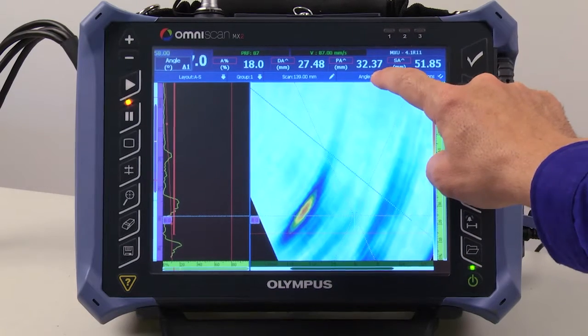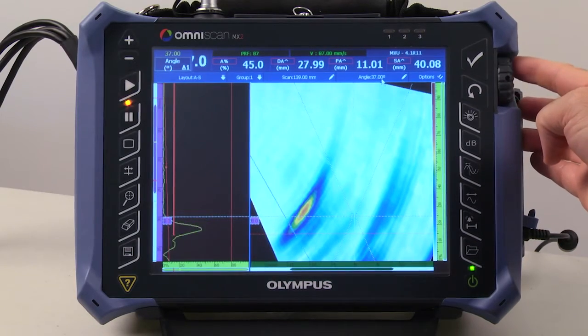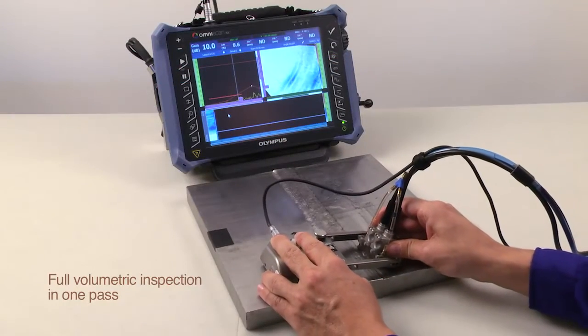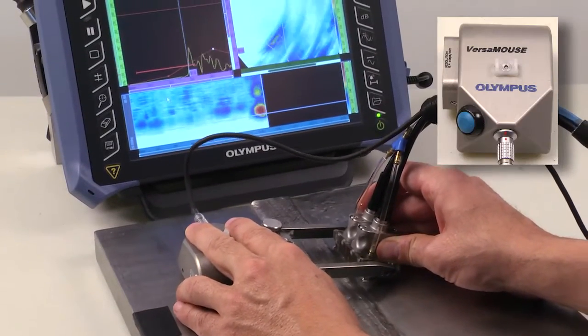In this example, programming a 30 to 80 degree longitudinal wave S-scan provides full volumetric inspection of the austenitic weld in one pass using the Olympus Versamouse scanner.